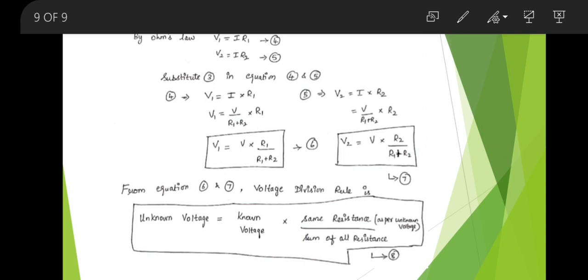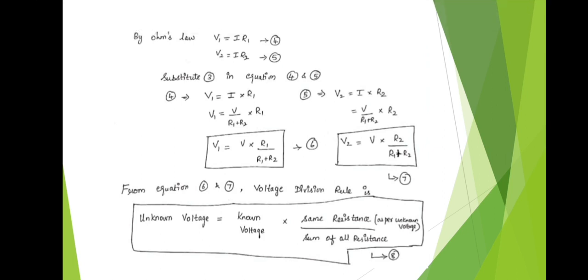In Equations 6 and 7, the left-hand side V1 and V2 are the unknown voltages — we don't know those voltages, hence they are named unknown voltage. V is the supply voltage, so we know its value — that is named known voltage. In Equation 6, the numerator has R1, which is the same resistance as the unknown voltage V1. Similarly in Equation 7, V2 = V × R2 / (R1+R2), where R2 corresponds to V2. Commonly, the voltage division rule states: unknown voltage = known voltage × (same resistance as per unknown voltage) / (sum of all resistances). This is the common formula for voltage division rule. Thank you.